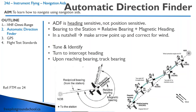For example, looking at the bottom right: let's say the relative bearing is north — pointing straight up — and the magnetic heading is 030. You add the two together: 030 plus 000 is 030. So your bearing to the station is 030. Then as you fly along, you're still flying a heading of 030.